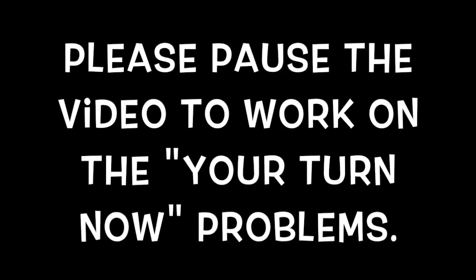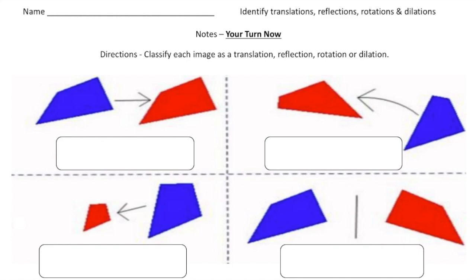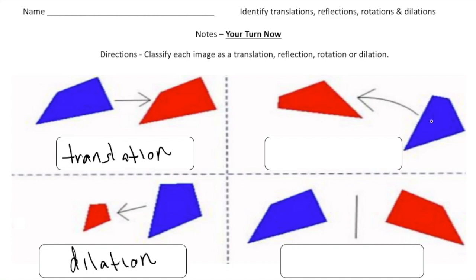Welcome back — let's see how you did. The first image shows a shape being moved, so that's a translation. The next one shows a large shape getting resized and becoming smaller, so that's a dilation. The third one shows a shape being rotated, so that's a rotation. And last, a shape on one side of a line with another on the other side — that's a reflection.